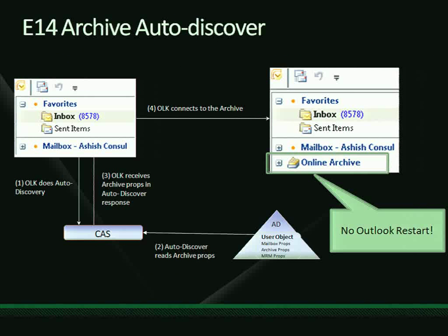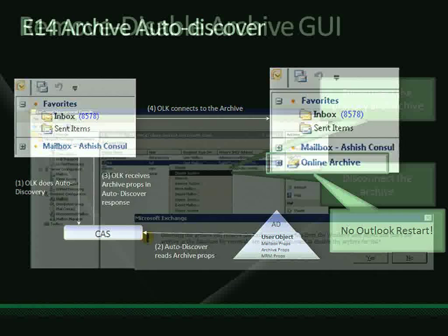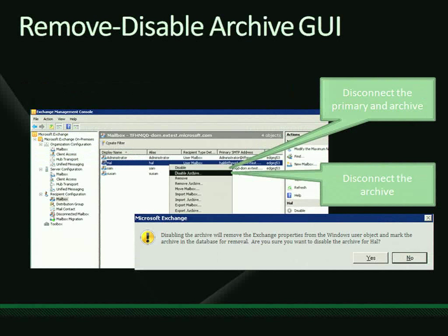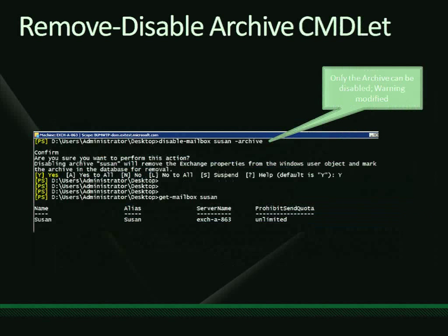The archive Autodiscover flow — Outlook receives the archive properties through Autodiscover. There are four properties we saw in AD, and eventually a new node appears the next time Autodiscover refreshes. Unlike my demo, which used early bits, it does not require an Outlook restart. How many folks think the fact that we don't require an Outlook restart is really good? Disabling and disconnecting the archive — you can disable just the archive or enable just the archive. The only prerequisite is that you have to have a primary mailbox. All the existing commandlets for remove, disable, et cetera apply.